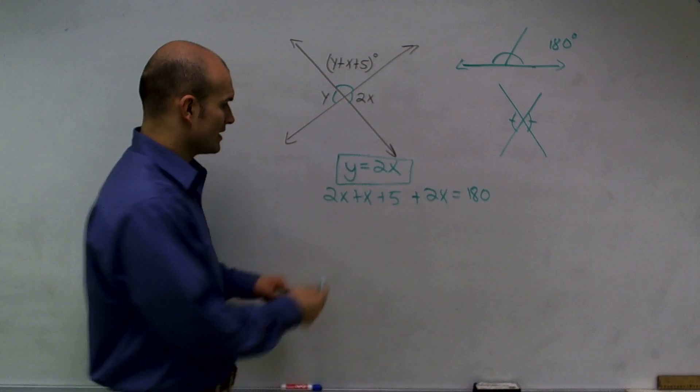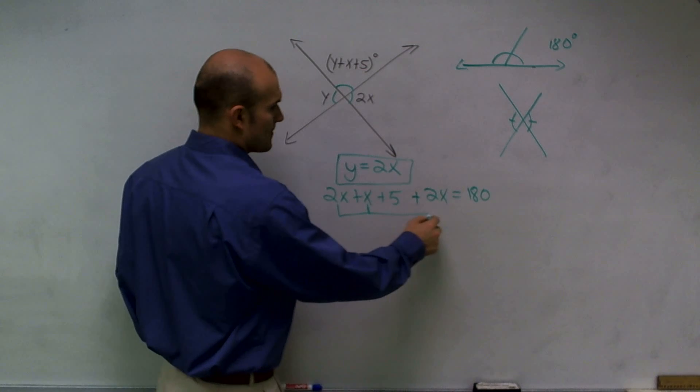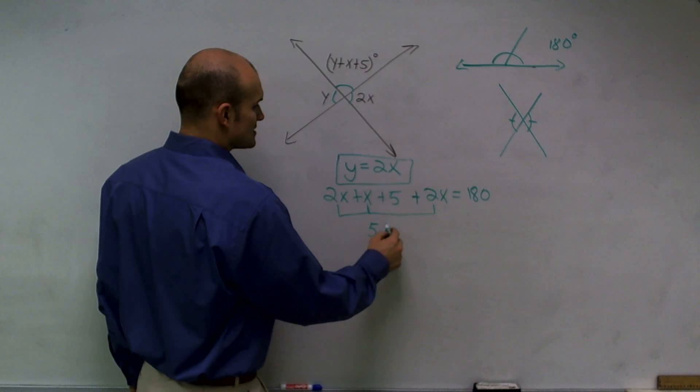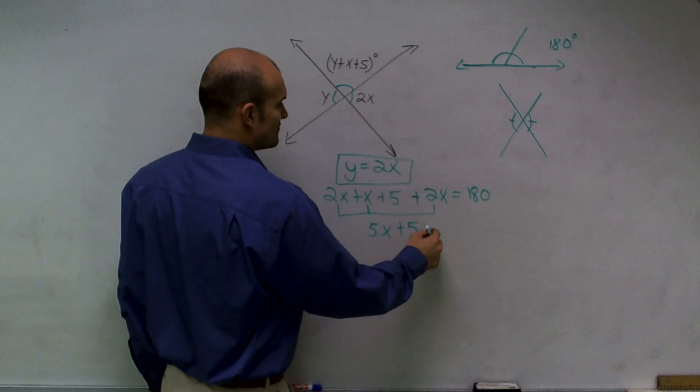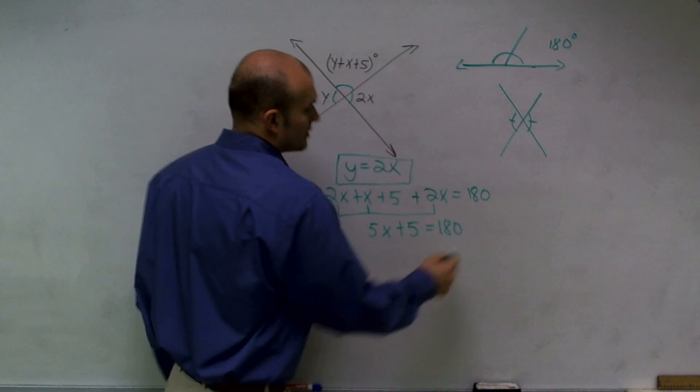I'm going to combine my like terms, and I get 5x plus 5 equals 180.